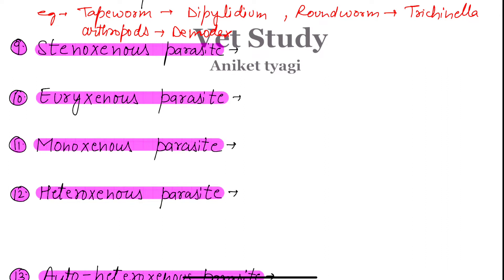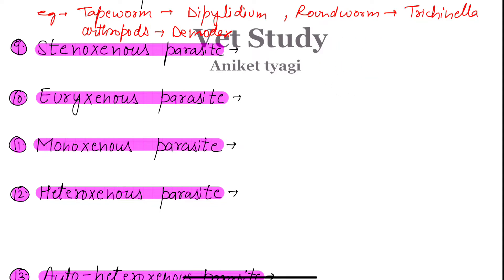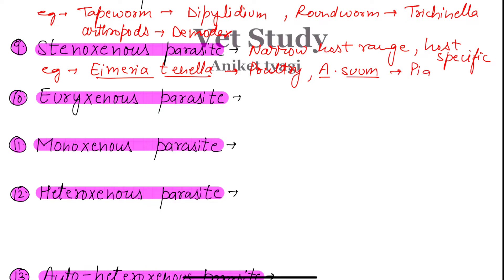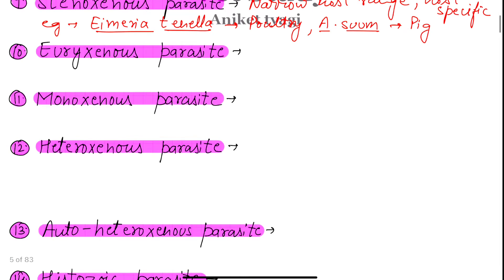Next we have the stenoxenous parasite. Stenoxenous parasites are those which have a very narrow host range. Every parasite has a host range — the number of hosts it can affect. Stenoxenous parasites have a very narrow host range, so they can also be called host-specific. Examples are Eimeria tenella, which is present in poultry, and Ascaris suum, which is present in pigs. These are examples of stenoxenous parasites.